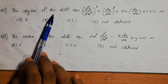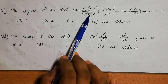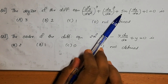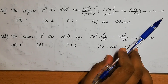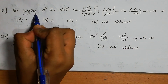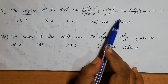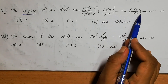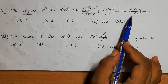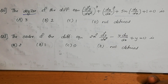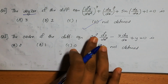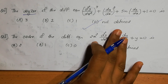Question number 11: The degree of the differential equation (d²y/dx²)³ + (dy/dx)² + sin(dy/dx) + 1 = 0. Since this contains sin(dy/dx), the given differential equation is not a polynomial equation in its derivatives. Therefore, the degree is not defined.